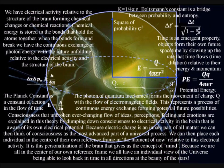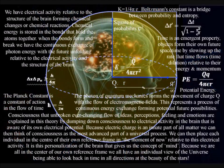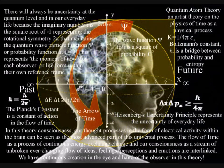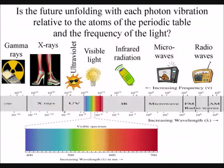With the future unfolding relative to the electrical activity and the structure of the brain, this is a totally universal process. The future is always unfolding with electrical activity relative to the structure of the atoms and the wavelength of the light.